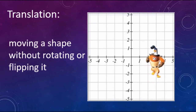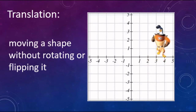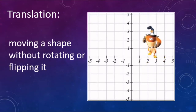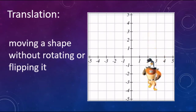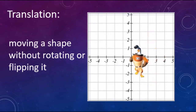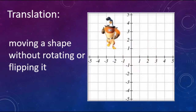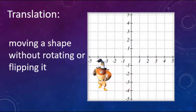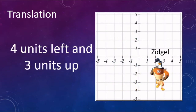We'll start out with translations. Translations is where you are moving a shape without rotating or flipping the shape. It can be diagonal, it can be straight across, left, right, however it works. So looking at Zijil here, we are going to move him four to the left and three units up.